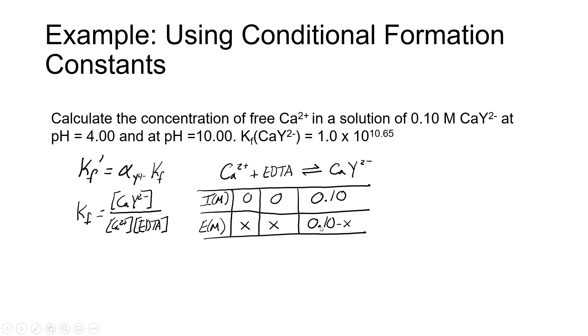Therefore, the calcium EDTA complex concentration becomes 0.1 minus X, and since the calcium and EDTA are coming from the same place, the calcium concentration is X, the EDTA concentration is X at equilibrium. Now our equilibrium constant is going to take the form 0.1 minus X in the numerator, X squared in the denominator. To find the concentration of free calcium, we're going to set the value of the conditional equilibrium constant equal to 0.1 minus X divided by X squared. We're calling the concentration of calcium X. We're going to solve this expression for X.